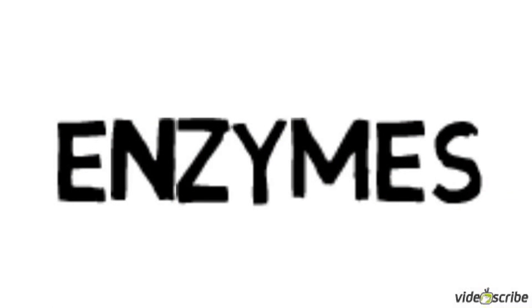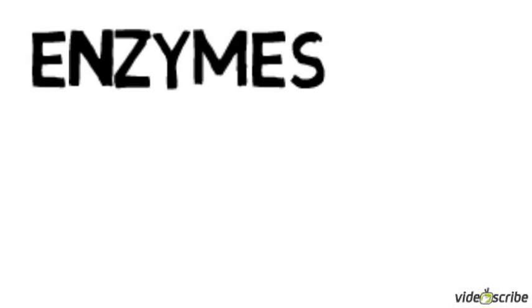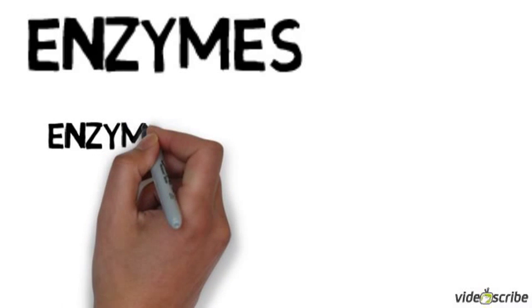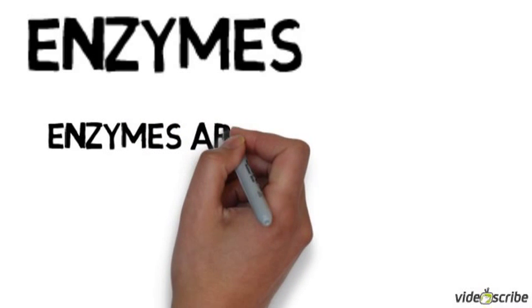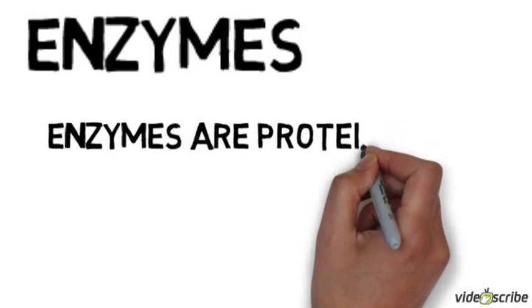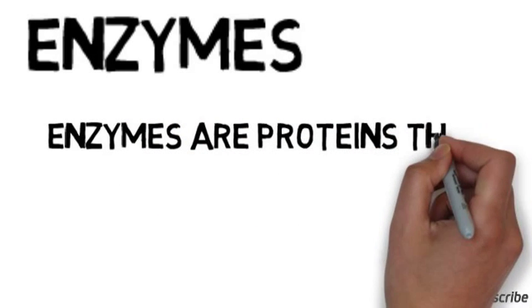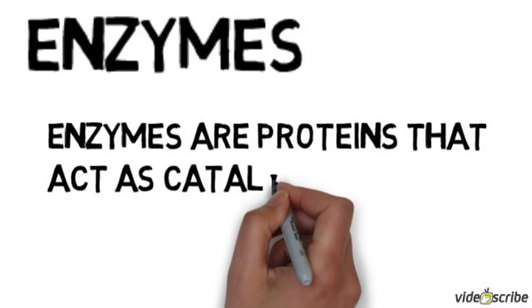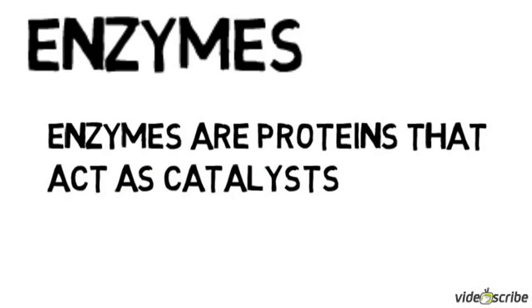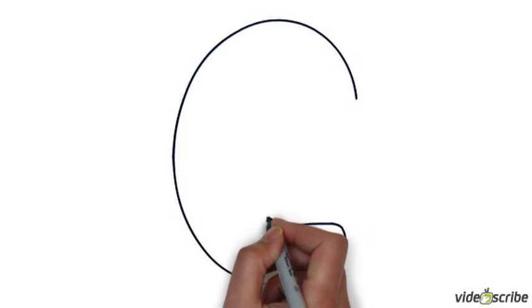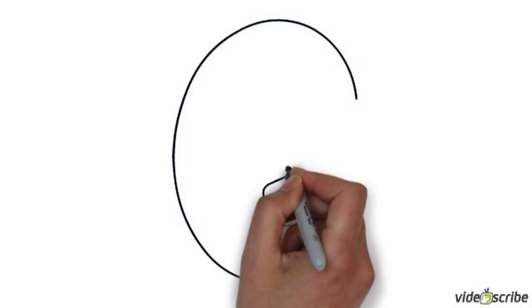This video is going to look at enzymes — what enzymes are and how they work. Enzymes are proteins; we talked about proteins in the last video. They are made of a long chain of amino acids and they act as catalysts. Catalysts are substances that make chemical reactions go quicker without being used themselves.